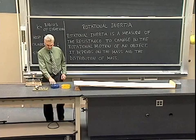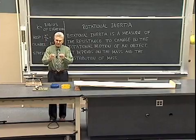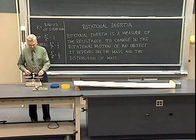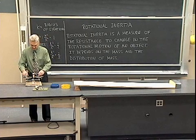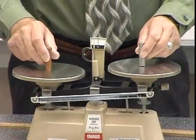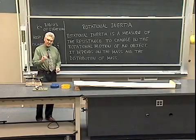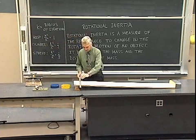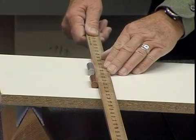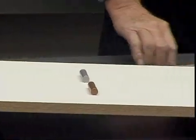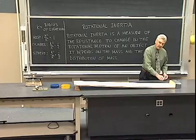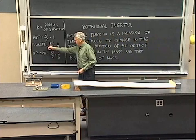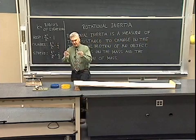Now let's compare cylinders with one another. Let's take two cylinders that have the same radius but one is more massive than the other. If I put this on the balance scale, we see that the copper is more massive than the aluminum. If we did the measurement, we'd find that the copper has about three times the mass of the aluminum. Let's compare how they roll down the hill. We see that with experimental error, they roll down together. Therefore they have the same ratio — radius of gyration squared to radius squared — and for cylinders that ratio is one half, independent of the mass of the cylinders.